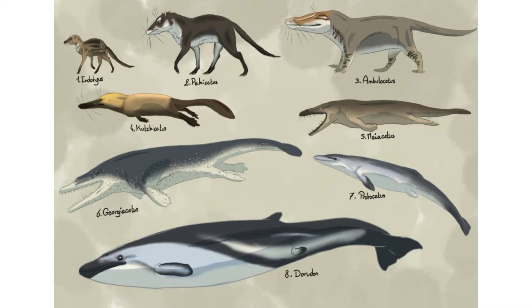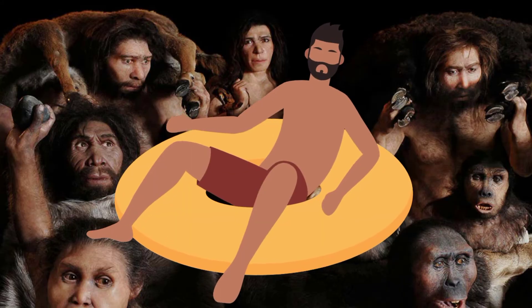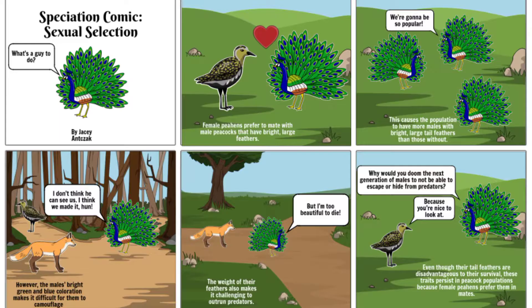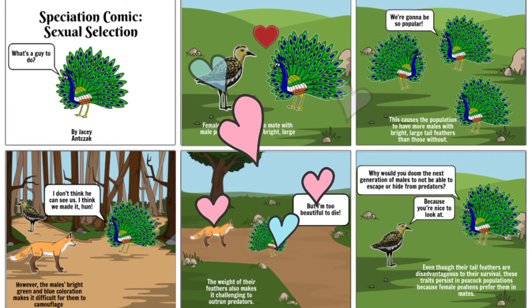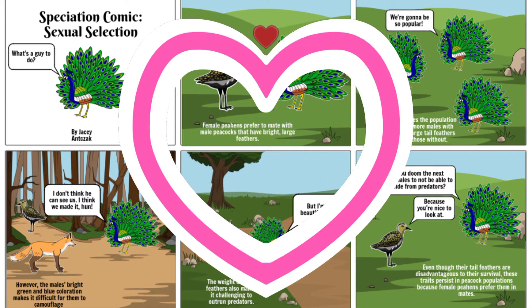Macro-evolution can turn dinosaurs into birds, amphibious mammals into whales, and ancestors of apes into humans. There is also a form of natural selection that depends on an organism's success at attracting a mate, a process known as sexual selection.